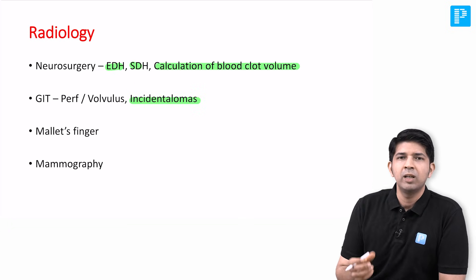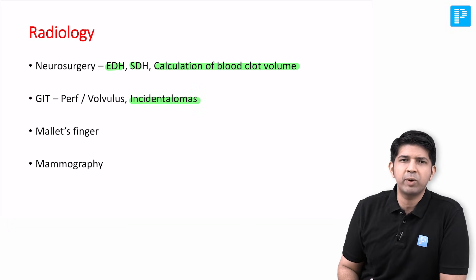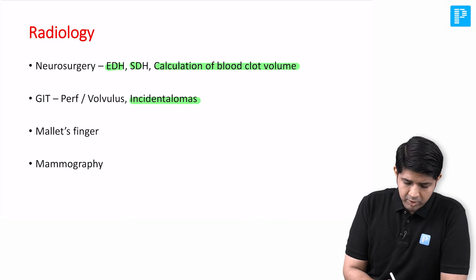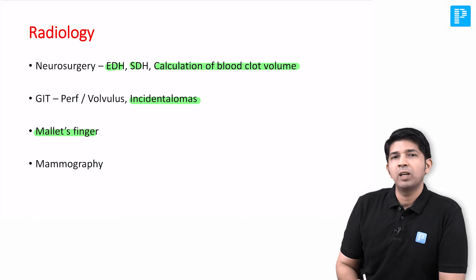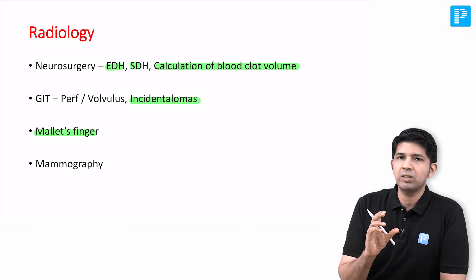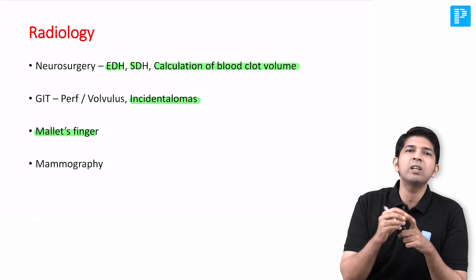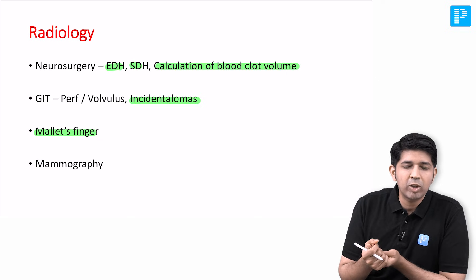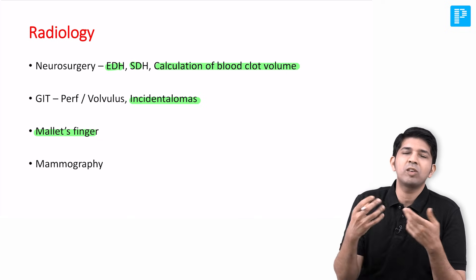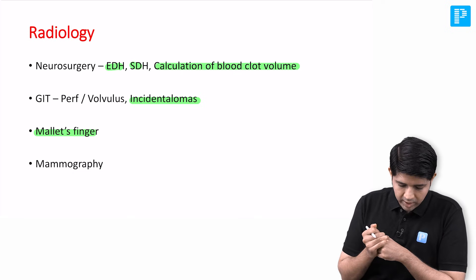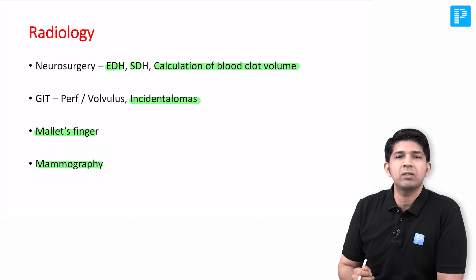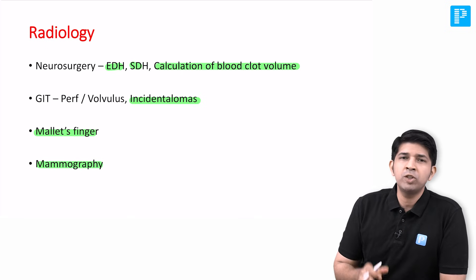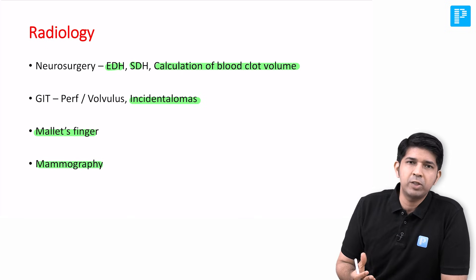Apart from that, you had certain incidental OMAs - there again there was an image-based question. They put up an image, given you the size, and asked you what the management was. Then there was a question on mallet's finger. Now this I felt was slightly tricky, because normally we tend to see the physical image of mallet's finger, but we rarely get to see the radiological image. So here they put the radiological image and asked you to diagnose the condition. There were few mammography-based questions as well. So in short, if your radiology was pretty strong, you could have cracked at least 80 to 90 percent of these questions quite comfortably.